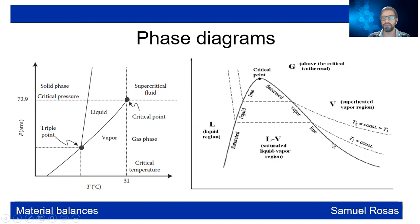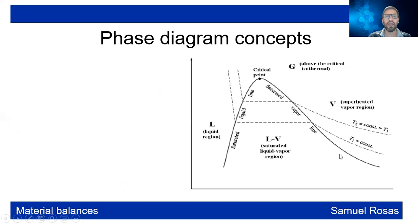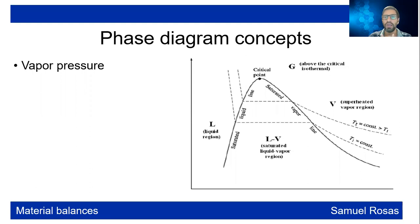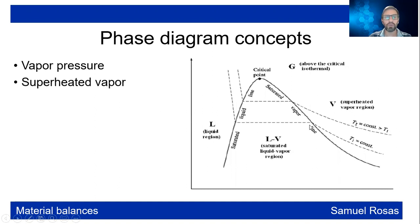Here you have the saturated vapor line. The first key concept is vapor pressure: the pressure at which evaporation will start. You have to understand that at constant vapor pressure, you will have constant temperature. You also have what we call superheated vapor, which is the vapor region — the superheated vapor region.